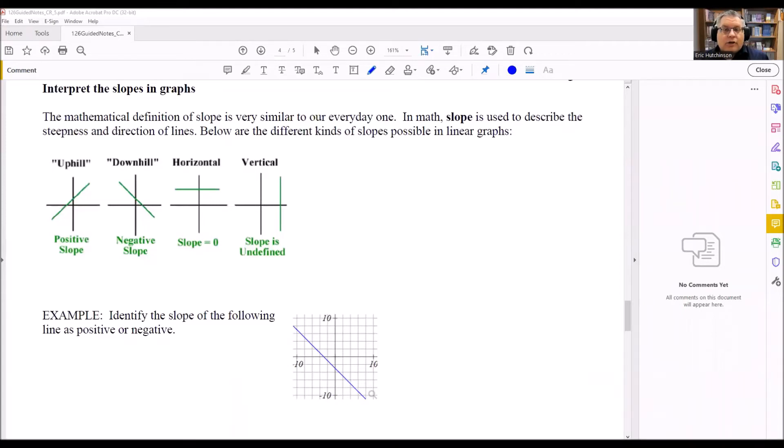Okay, we're going to talk about interpreting slopes in graphs. So the word slope just means that it's a measure of steepness, how steep the line is, and also the direction.